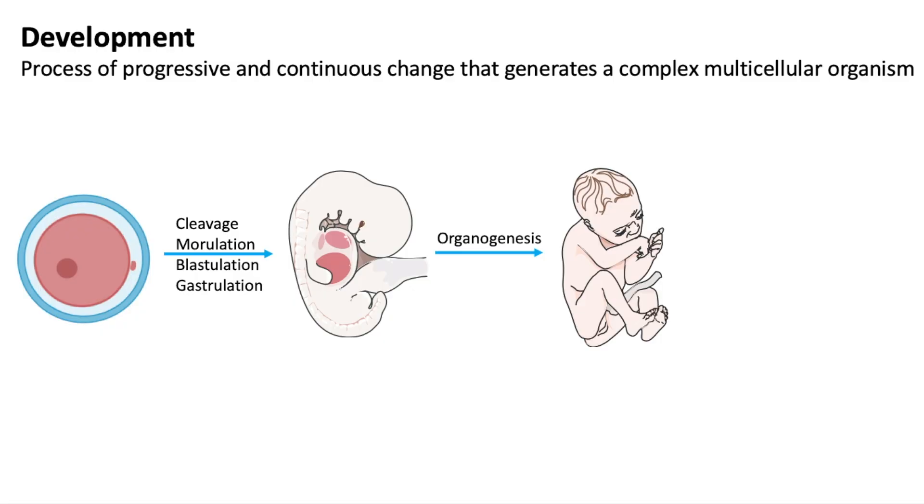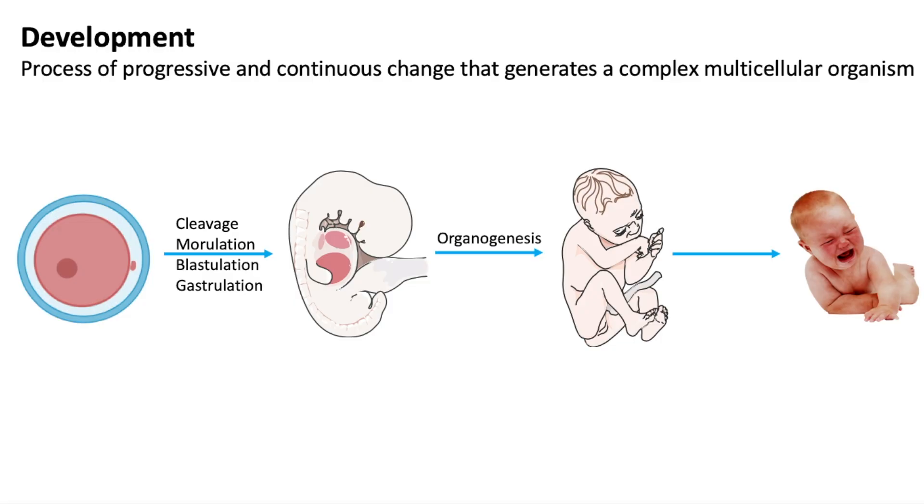After this, the developing mammal is a fetus until birth. At birth, it becomes a neonate. And it doesn't stop there. Development progresses to the maturation of the adult form and continues into senescence.